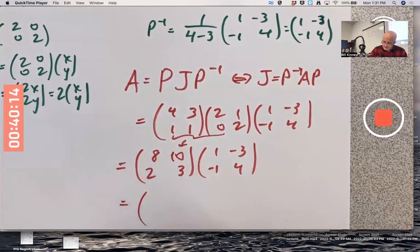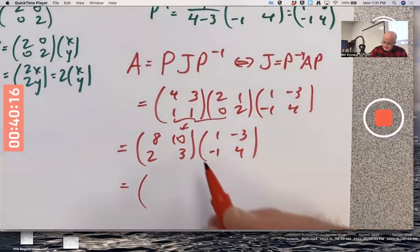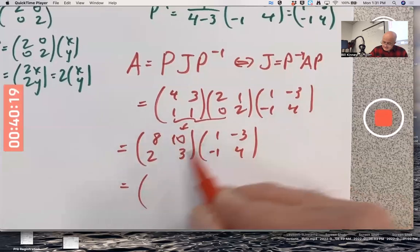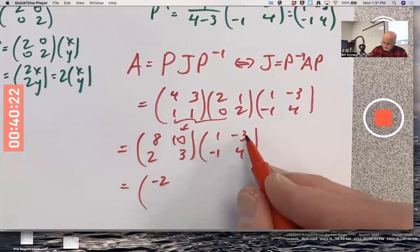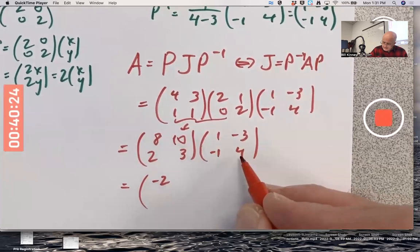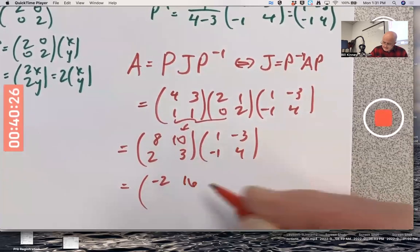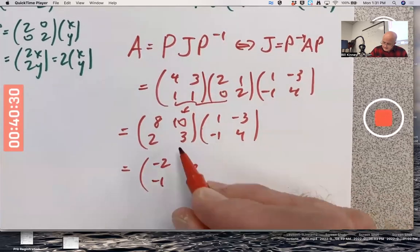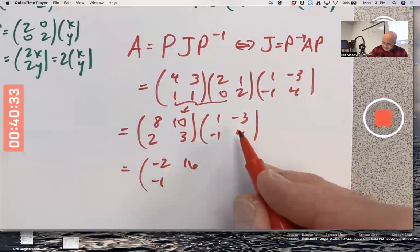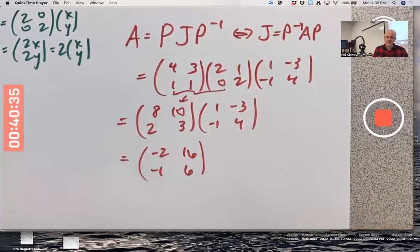Somebody check my work. Now multiply these two. Maybe really check my work on those two. Looks like this is going to be a negative two. Let's see. Negative twenty-four plus forty. Sixteen. Negative one and twelve minus six, six. Please double check that in your head.